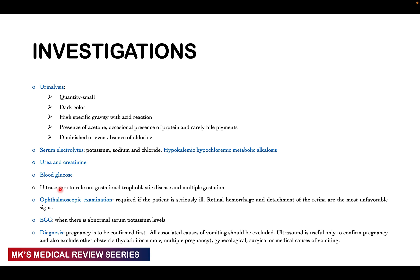An ophthalmoscopic examination may be required if the patient is seriously ill, because retinal hemorrhage and detachment of the retina are the most unfavorable signs. An ECG must be done because of abnormal low potassium levels. A diagnosis of pregnancy should be confirmed first before diagnosing hyperemesis gravidarum, and all associated causes of vomiting should be excluded. Ultrasound is useful to confirm the pregnancy and exclude other obstetric causes such as hydatidiform moles, multiple pregnancies, and gynecological, surgical, or medical causes of vomiting.